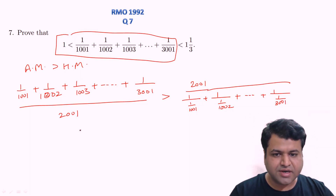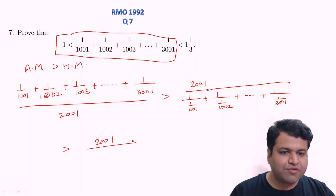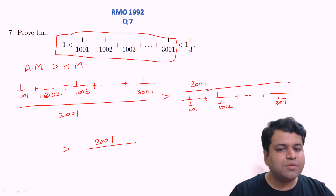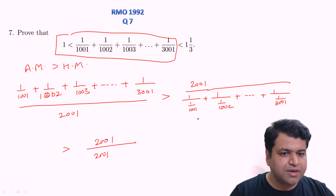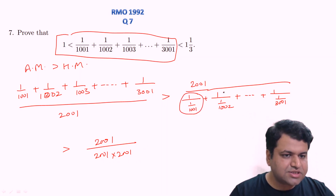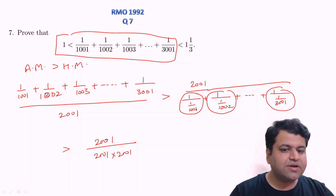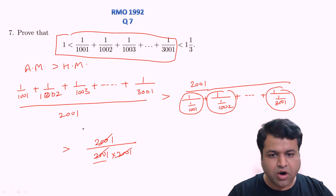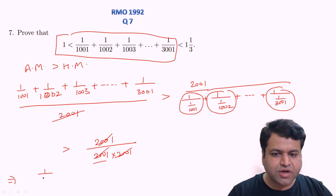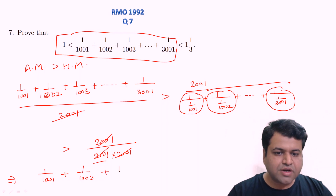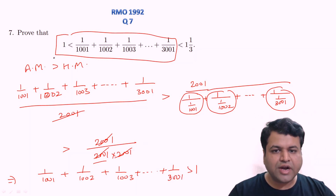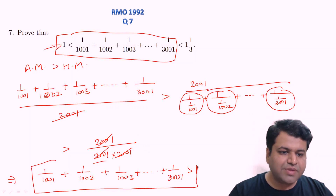The reciprocals of these terms form an AP with 2001 terms. The middle term of this AP is 2001, so the sum of the AP is 2001 × 2001 (n × middle term). After cancellation, this directly implies that 1/1001 + 1/1002 + 1/1003 + ... + 1/3001 is strictly greater than 1. That completes the first part of the inequality, using AM ≥ HM.